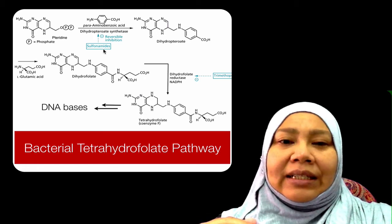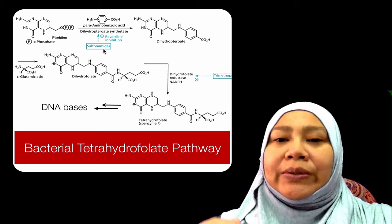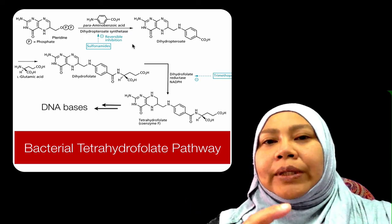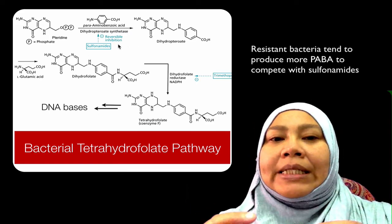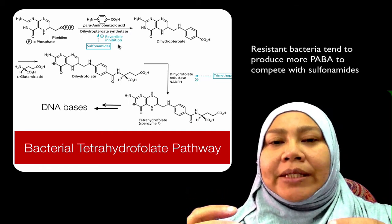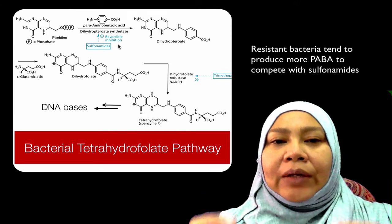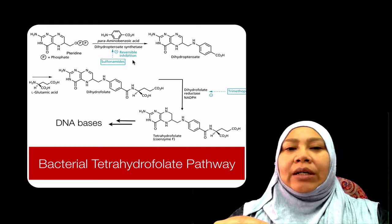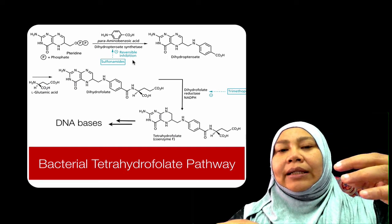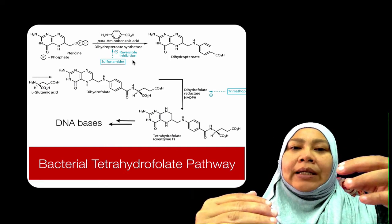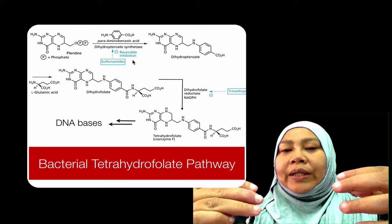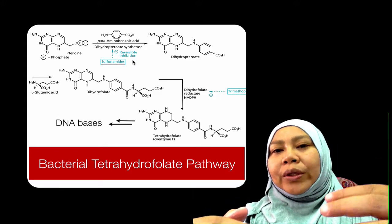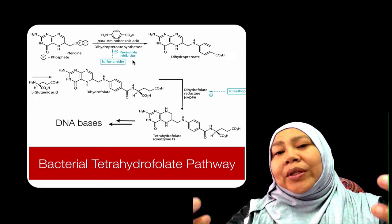Sulfonamides will competitively inhibit DHS, competing with PABA (para-aminobenzoic acid). Bacteria, when they sense sulfonamides around, will produce more PABA. As you know, when the concentration of the substrate is getting higher than the inhibitor — since they are competing for the same target site — the one with higher concentration will, in a sense, win.